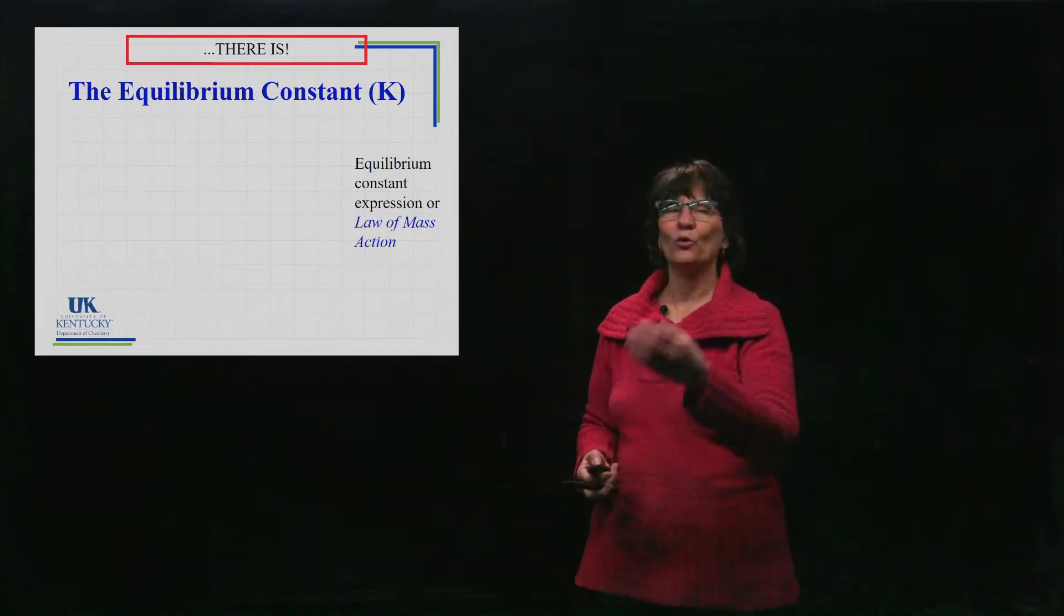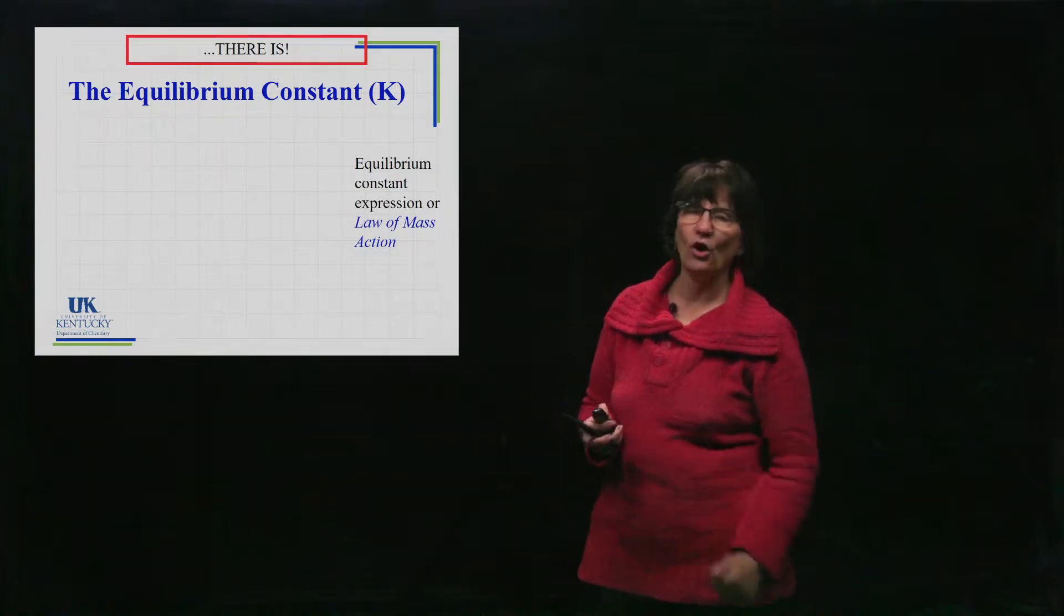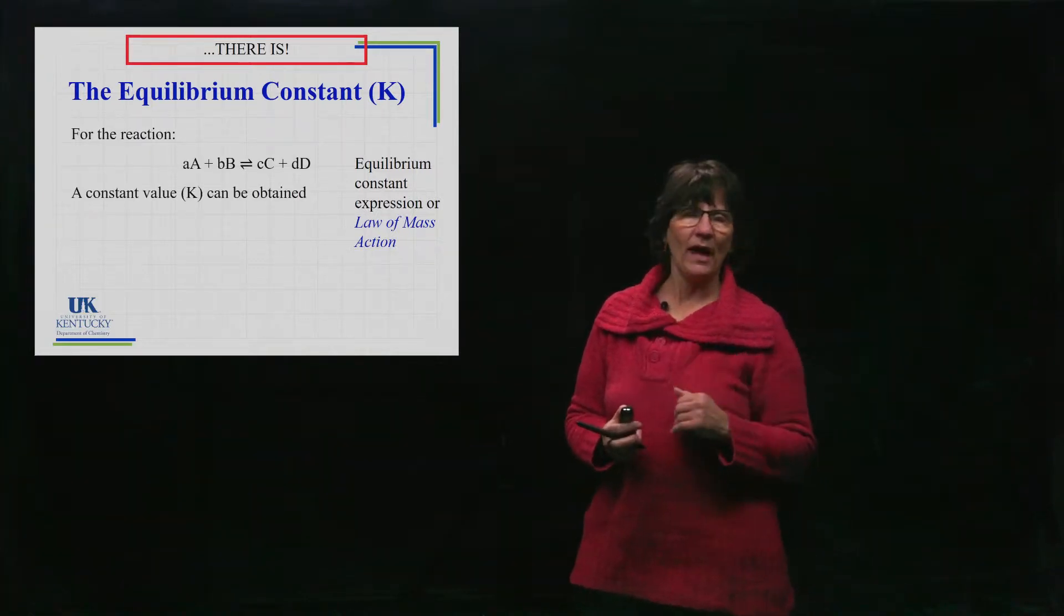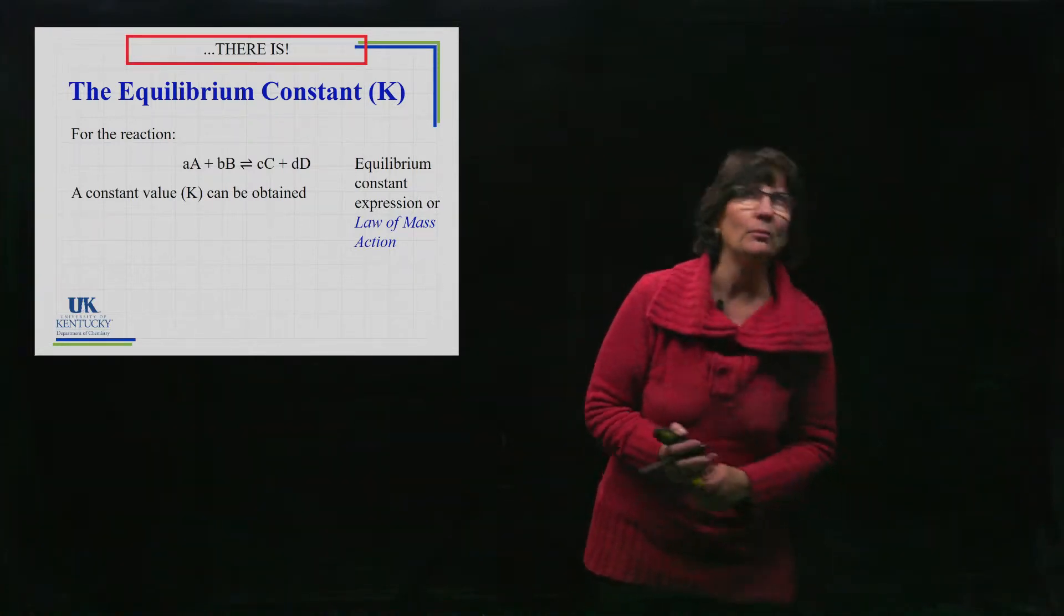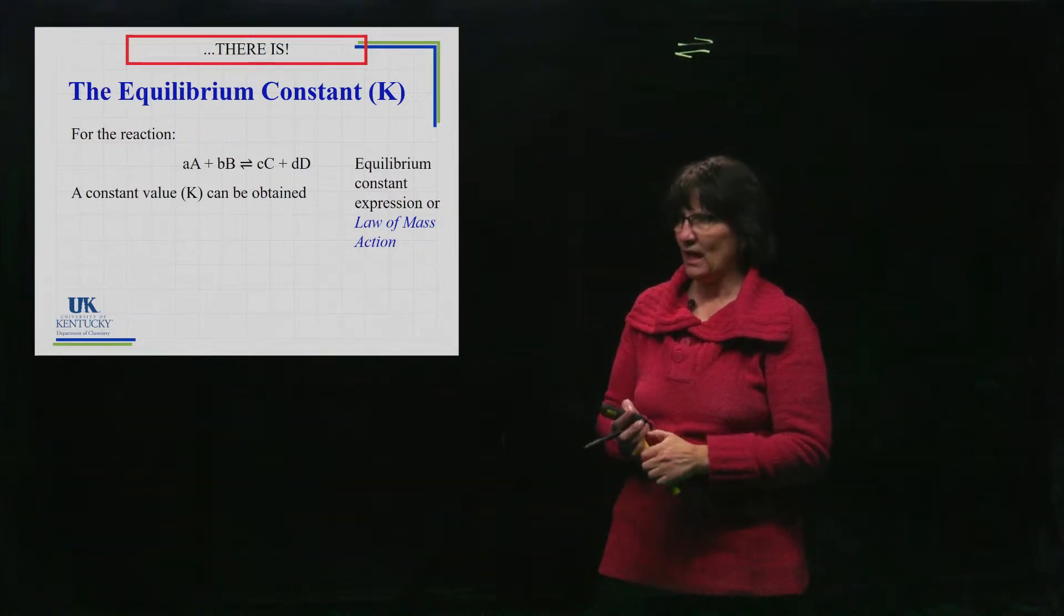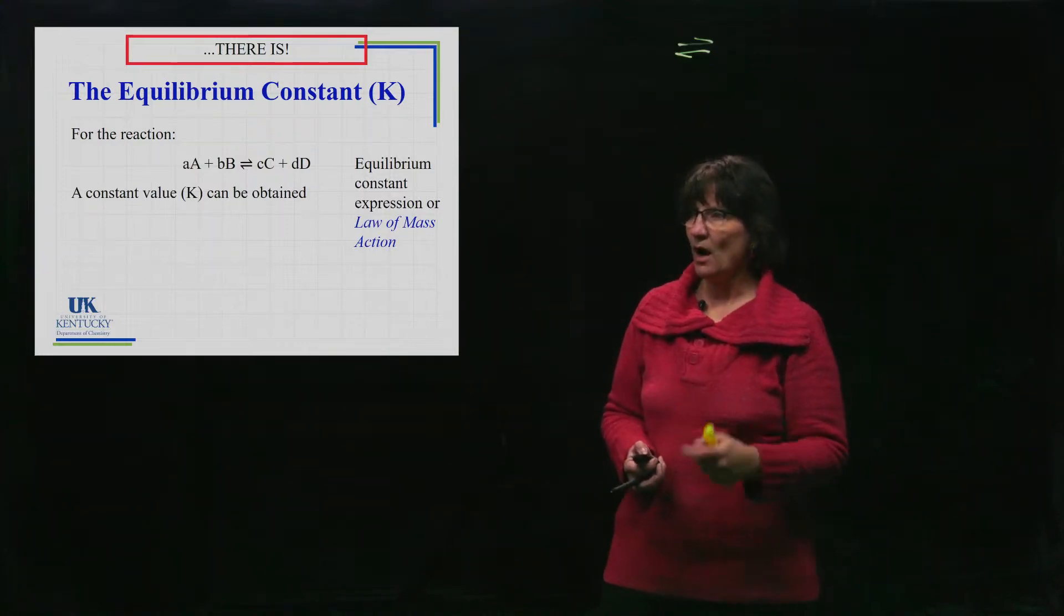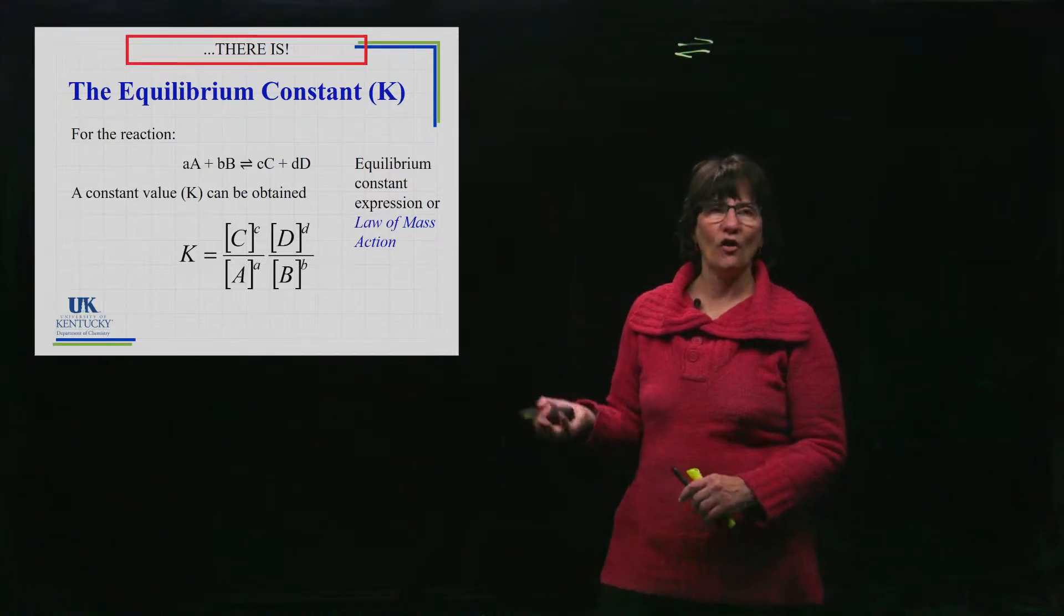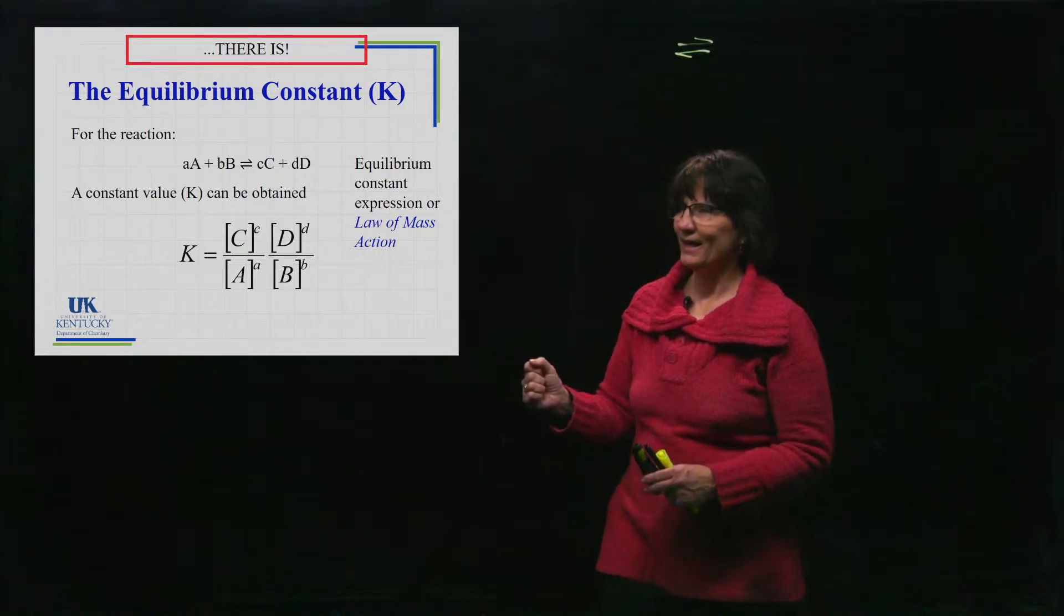Very often I will call it the equilibrium constant expression because that's what I grew up with, what I taught it as many times, but it's also called the law of mass action in some books. So here is our reaction, notice the equilibrium arrows. The back and forth arrows always give away that we're dealing with an equilibrium. So to construct K, this equilibrium constant, what you do is this expression.